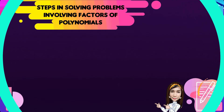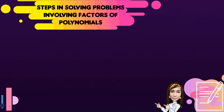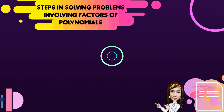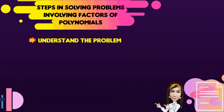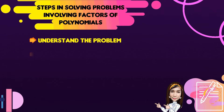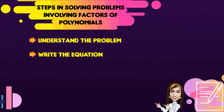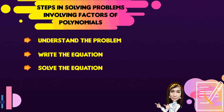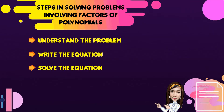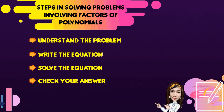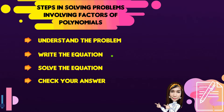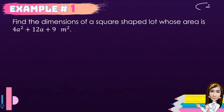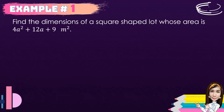Here are the steps in solving problems involving factors of polynomials. First, understand the problem. Second, write the equation. Third, solve the equation. And for the last, check your answer. Now, for you to understand, let's have the first example.